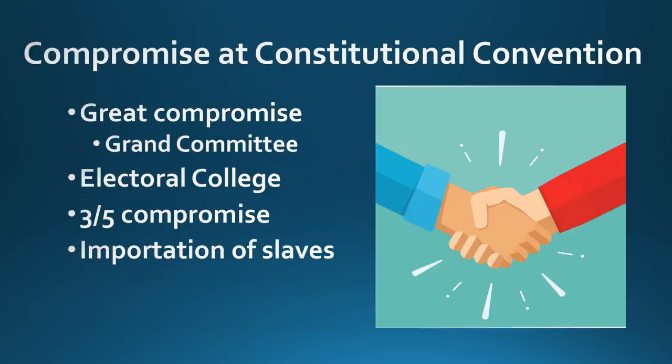Central to the constitutional convention is compromise. Sometimes we assume the constitution just came down the way that it is, but it really didn't. Small states wanted representation done equally in Congress, whereas large states wanted it done based on population. The grand committee formed the Great Compromise and created the bicameral legislature, giving the House to benefit large states and the Senate to benefit small states. With the electoral college, some wanted the people to directly choose the president while others wanted Congress to do it, so the electoral college chooses the president, but people get to choose the members of the electoral college.